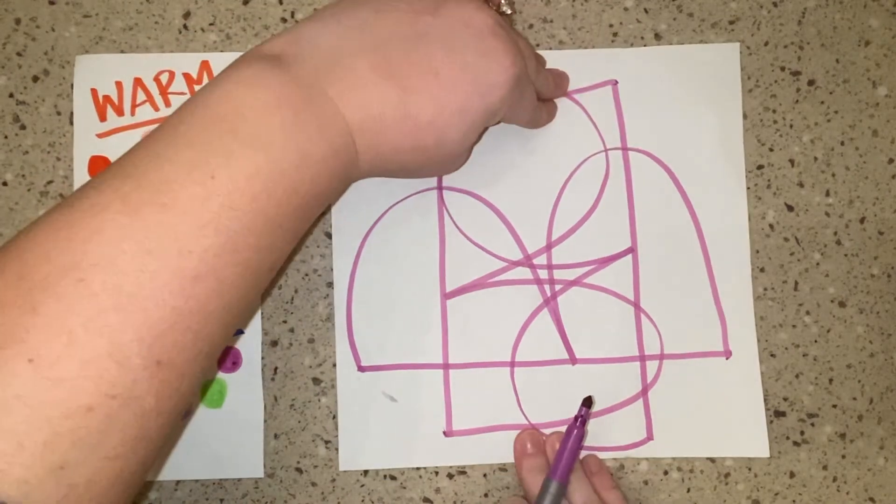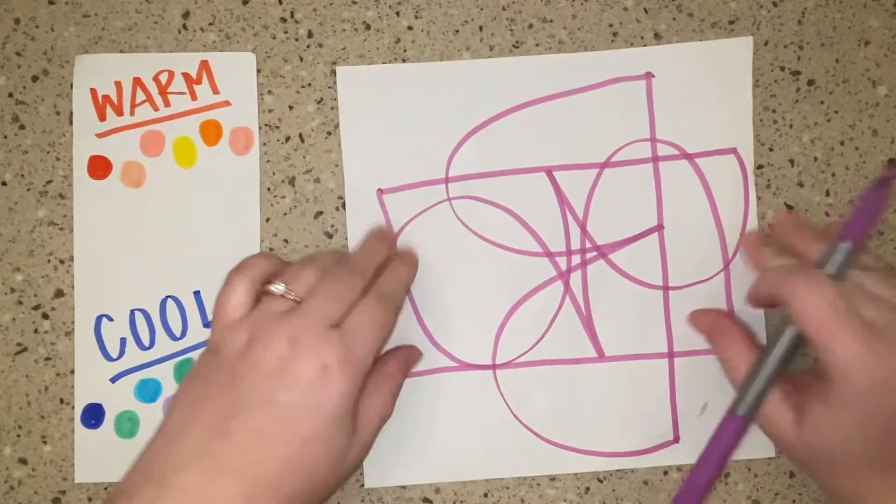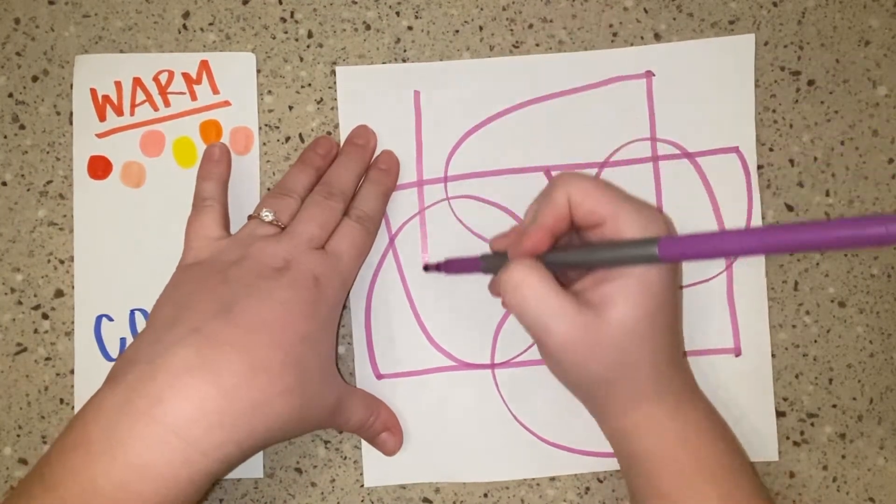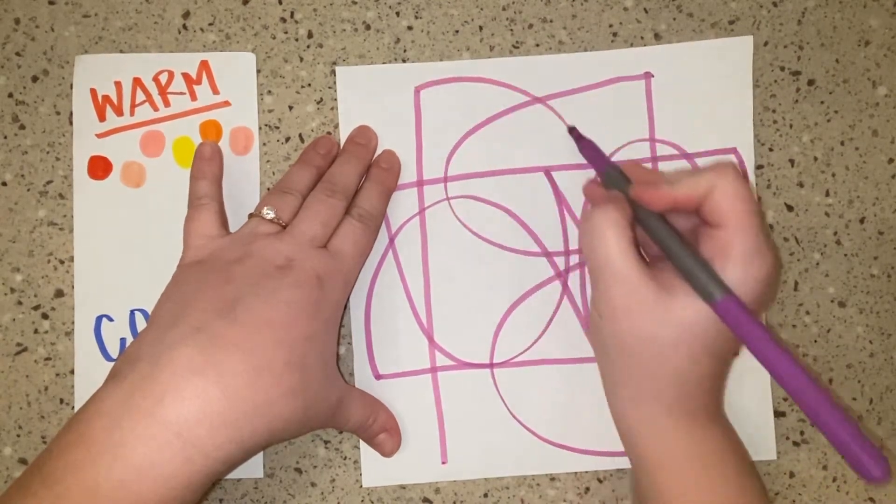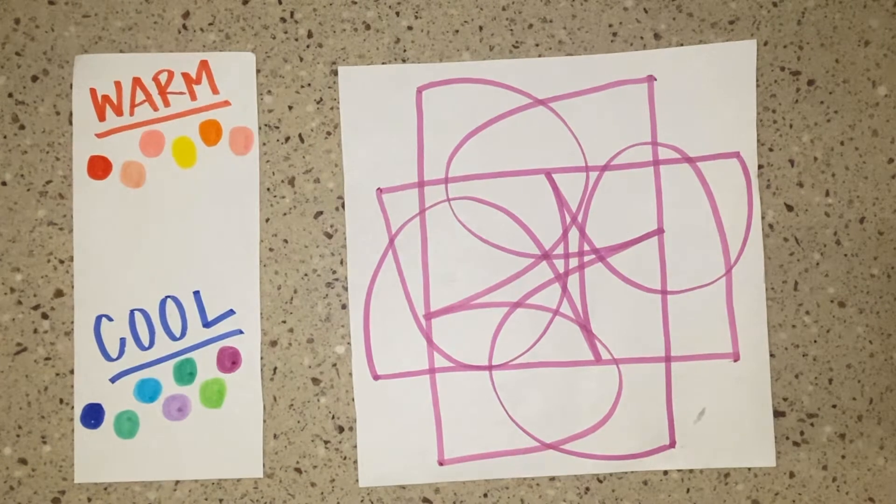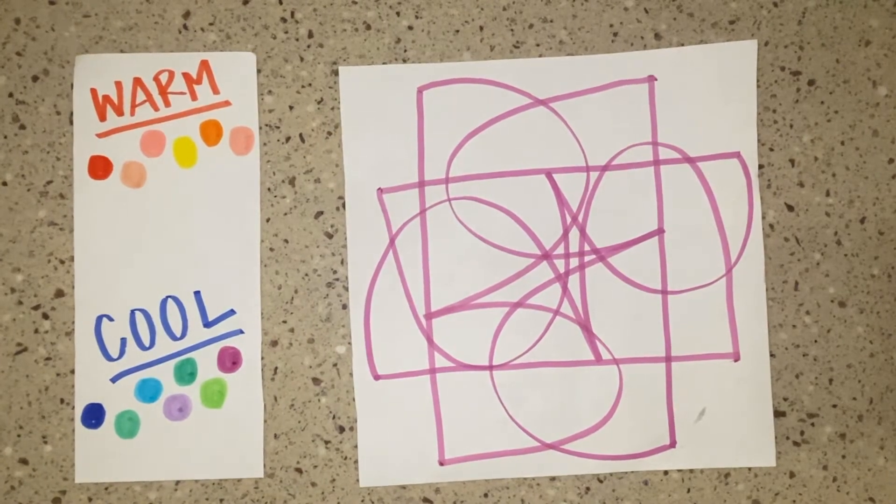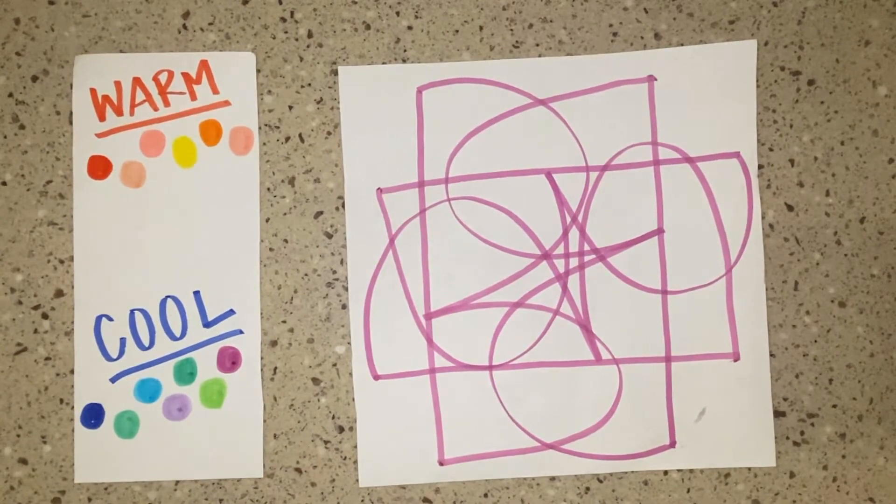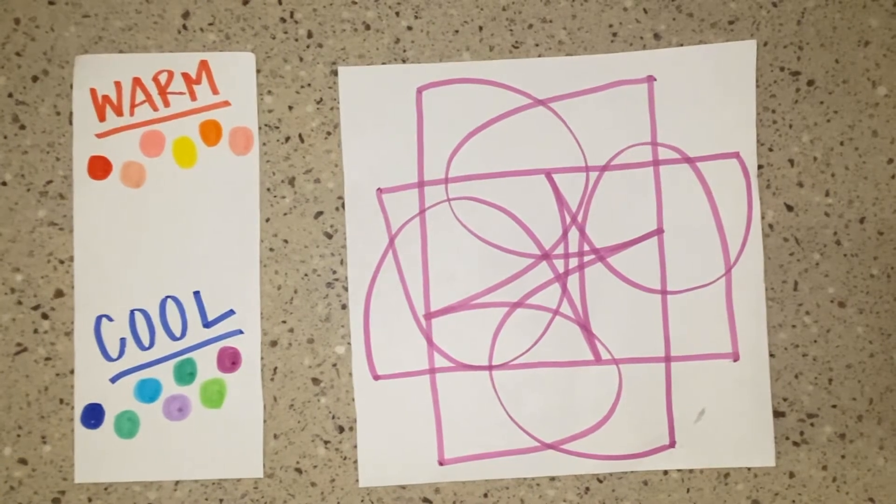We're going to rotate it one last time and draw that last final fourth capital B. Again, you won't be drawing a B, you will be drawing the first letter of your name. So now I have created an abstract drawing using the letter B.